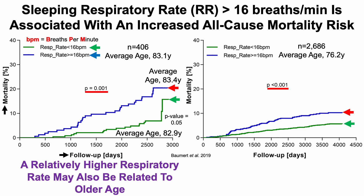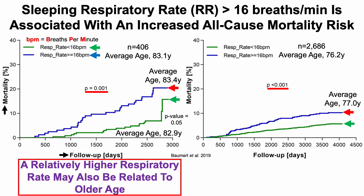Once again, older age may be contributing to these results. The group with significantly increased all-cause mortality risk had an average age of 77 years, while the group with reduced all-cause mortality risk — respiratory rate less than 16 breaths per minute — had an average age of 75.9 years, which was significantly lower. So age may be one factor that contributes to a relatively higher nighttime sleeping respiratory rate.